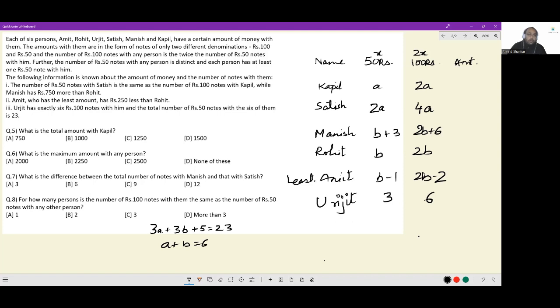Now remember you were also told the number of 50 rupees notes with any person is distinct and each person has at least 1 fifty rupee note with him. Among the available numbers look at b minus 1. It has a special value. b minus 1 has to be minimum, has to be greater than equal to 1 or b has to be greater than equal to 2. If b is greater than equal to 2, the possible solution sets here are 2 and 4. a being 4 and b being 2 works.